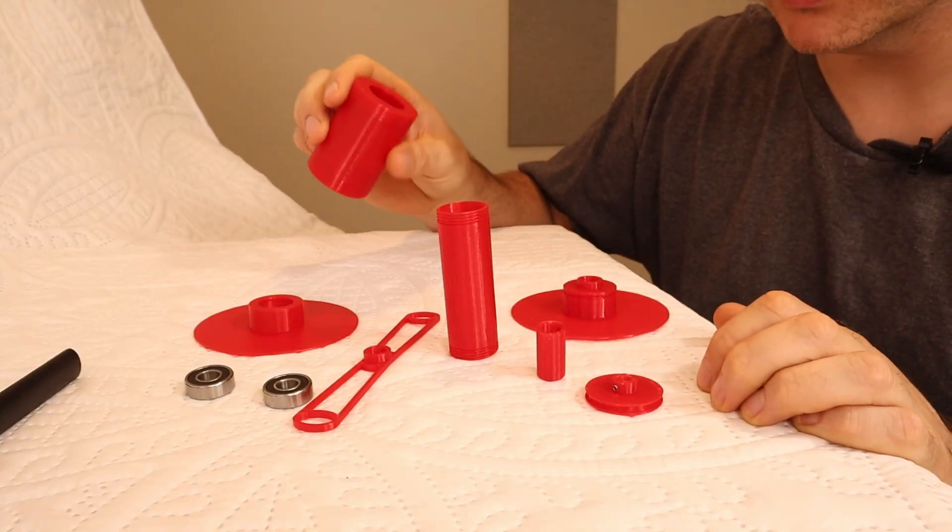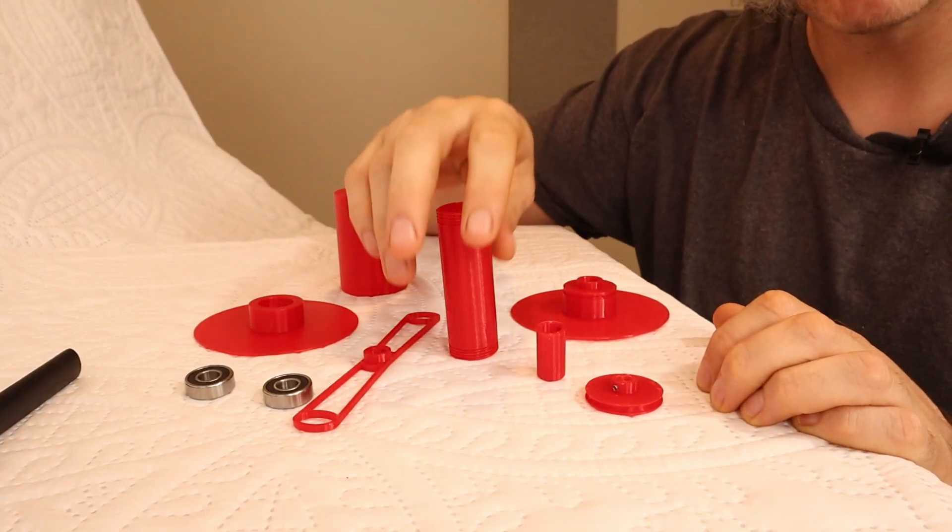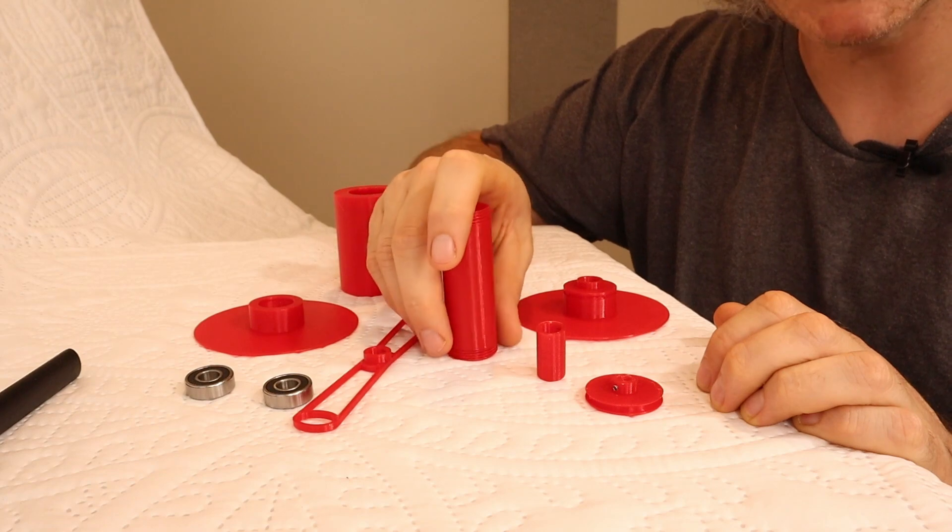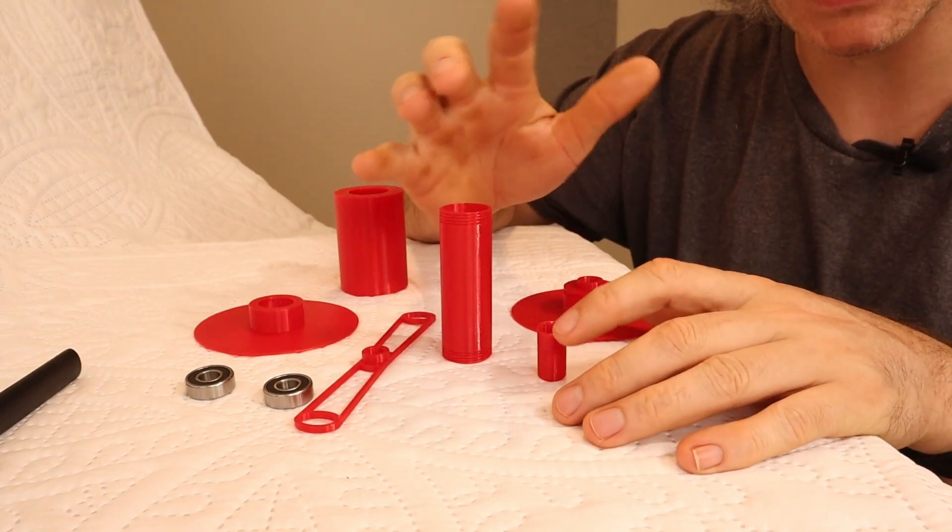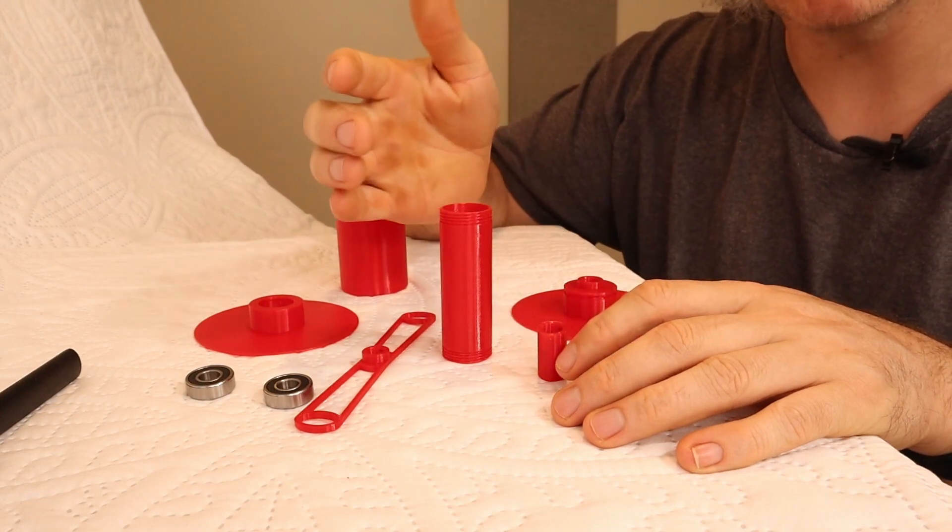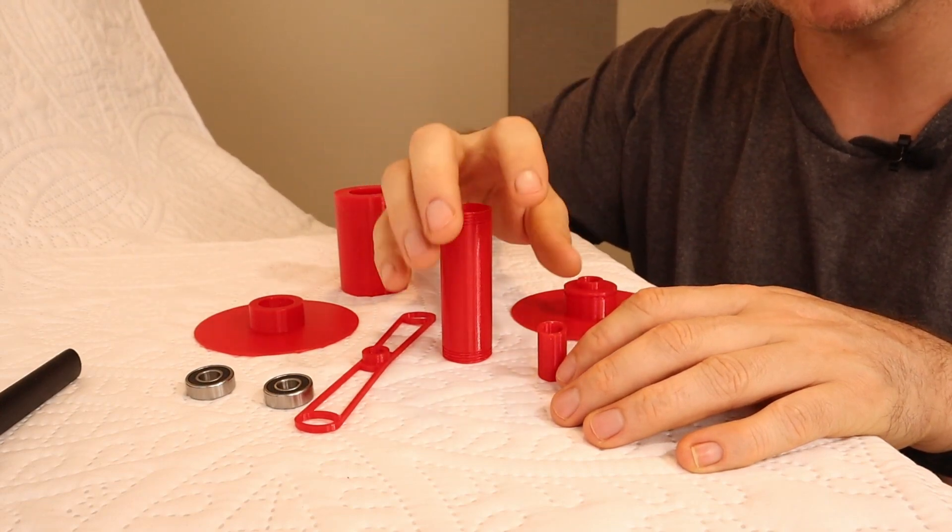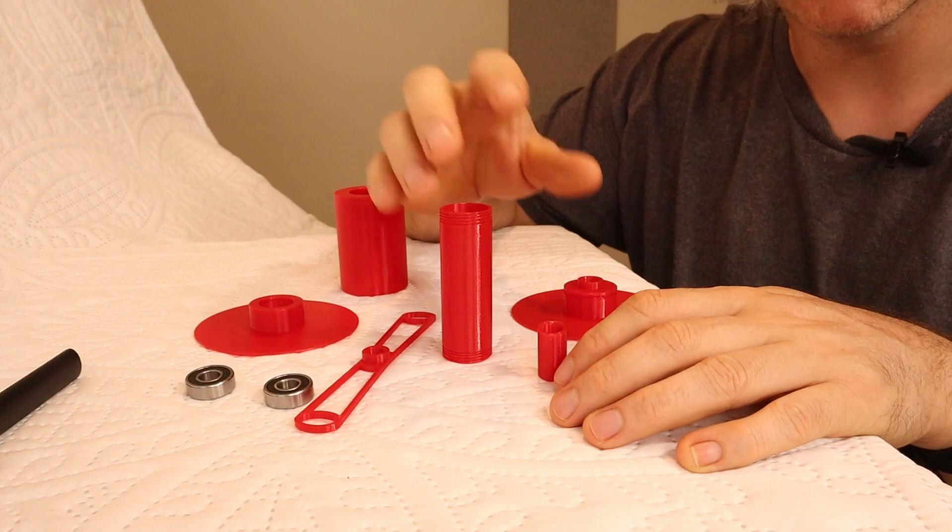Hello, today I'm going to be talking about some 3D printable files that I've made for the Electric Eel Wheel 6, which make a lace weight flyer. So basically it lets you run the flyer at a higher speed. For lace weight, where you often have to add a lot of twist, it lets you make that lace weight a lot quicker.